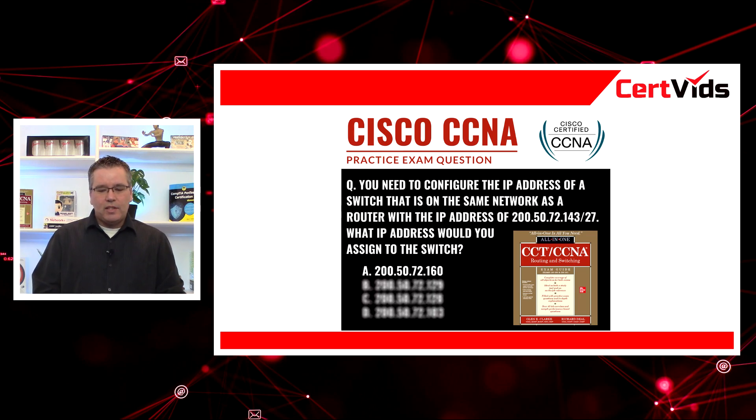So we look at choice A. Choice A is 200.50.72.160. So it's too high. It is the value of the next network ID. So that is not the correct answer.